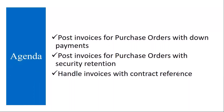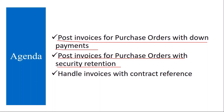The topics we are going to cover today: we will see post invoices for purchase orders with down payments, so we will see down payment processing — how the down payment happens in the PO, then subsequent activity, how it is related to MIRO. Then post invoices for purchase orders with security retention, what security retention is and how it is done in the purchasing cycle. Then handle invoices with contract reference.